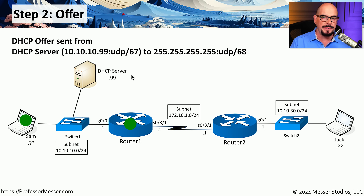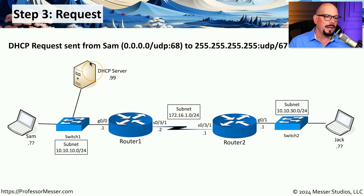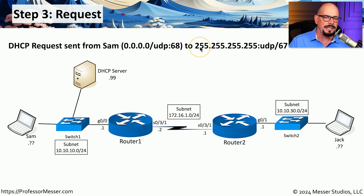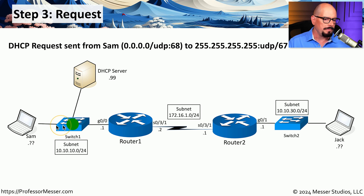If there were more DHCP servers on this network, Sam would receive multiple offers to choose from. In step three — the Request part of this communication — Sam is going to choose one of the offers received and send a request for that IP address back to the DHCP server. The actual packet is a request sent from Sam's computer using 0.0.0.0, because Sam does not yet have an IP address. It is sent from UDP port 68 to 255.255.255.255 over UDP port 67. Since it is a broadcast, all of the devices on this local subnet will receive this request, including the DHCP server.